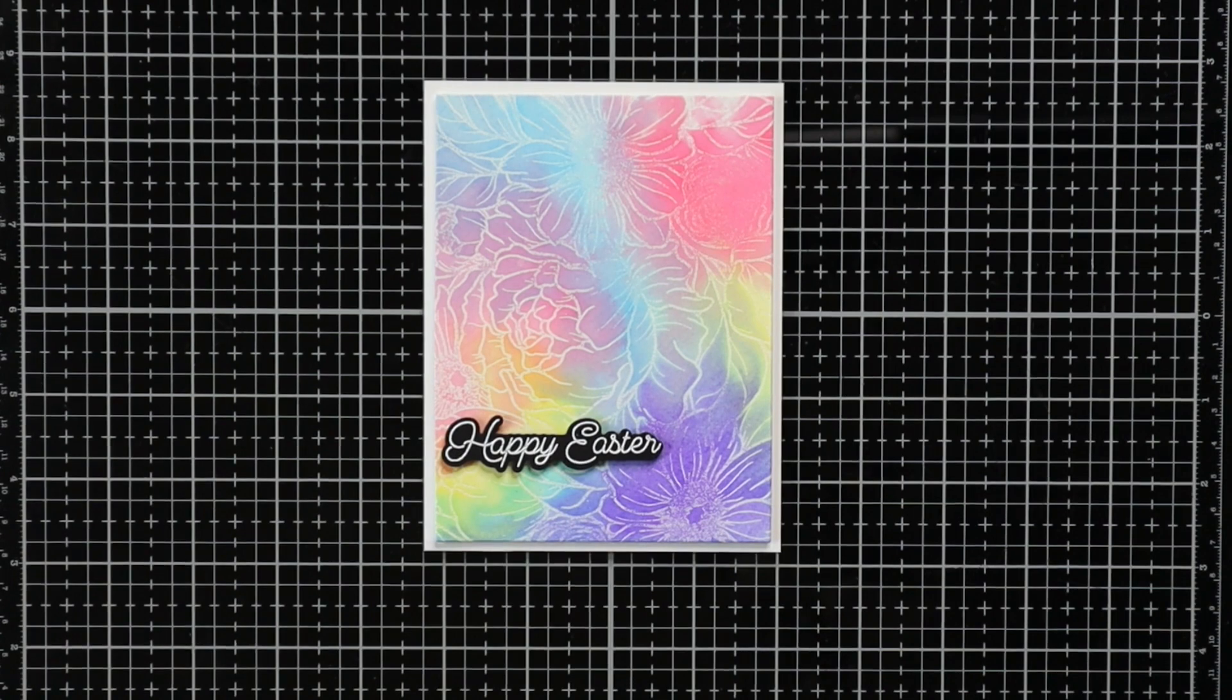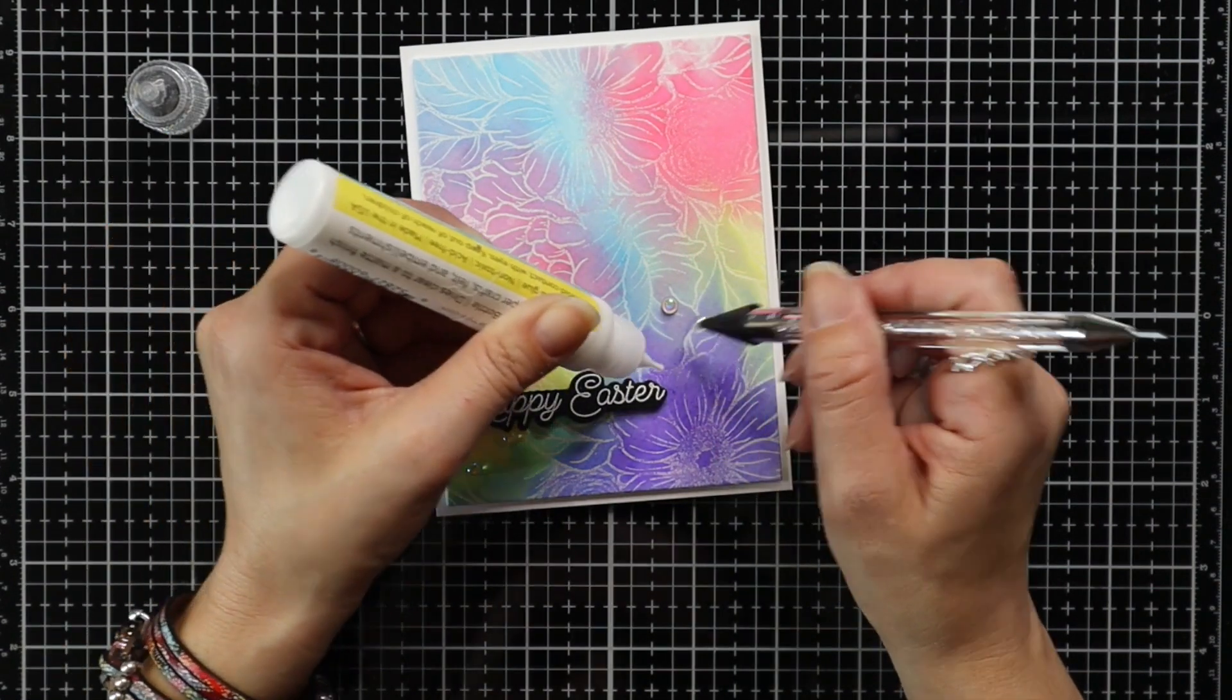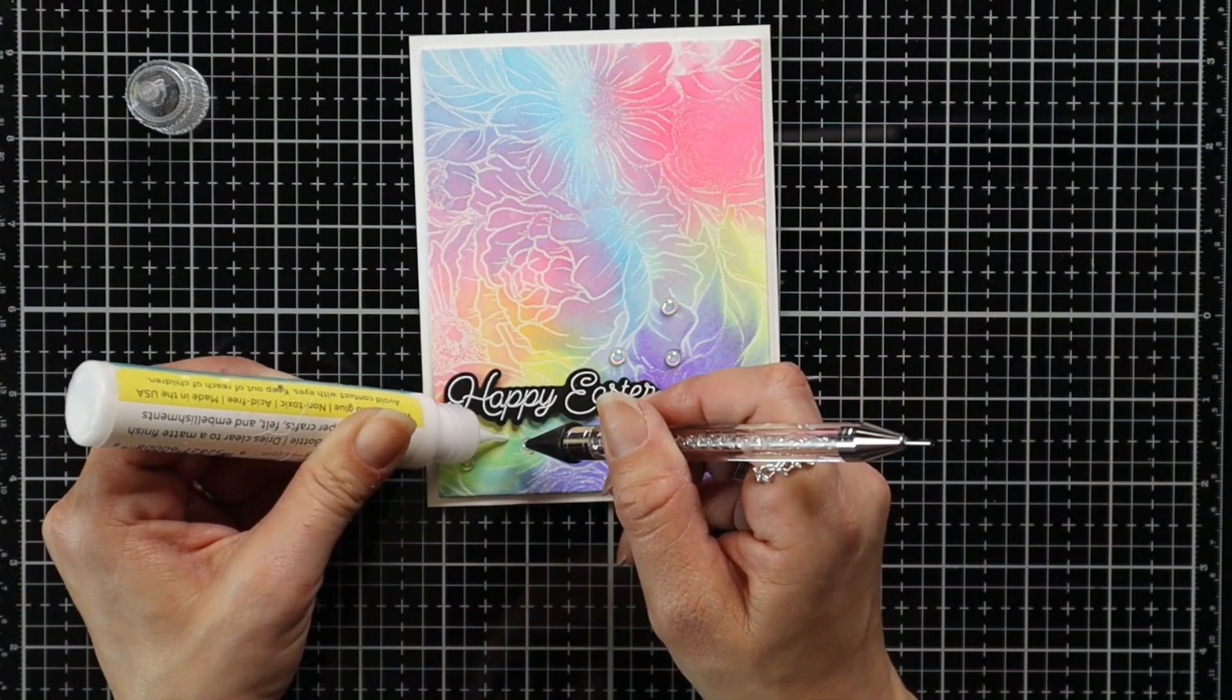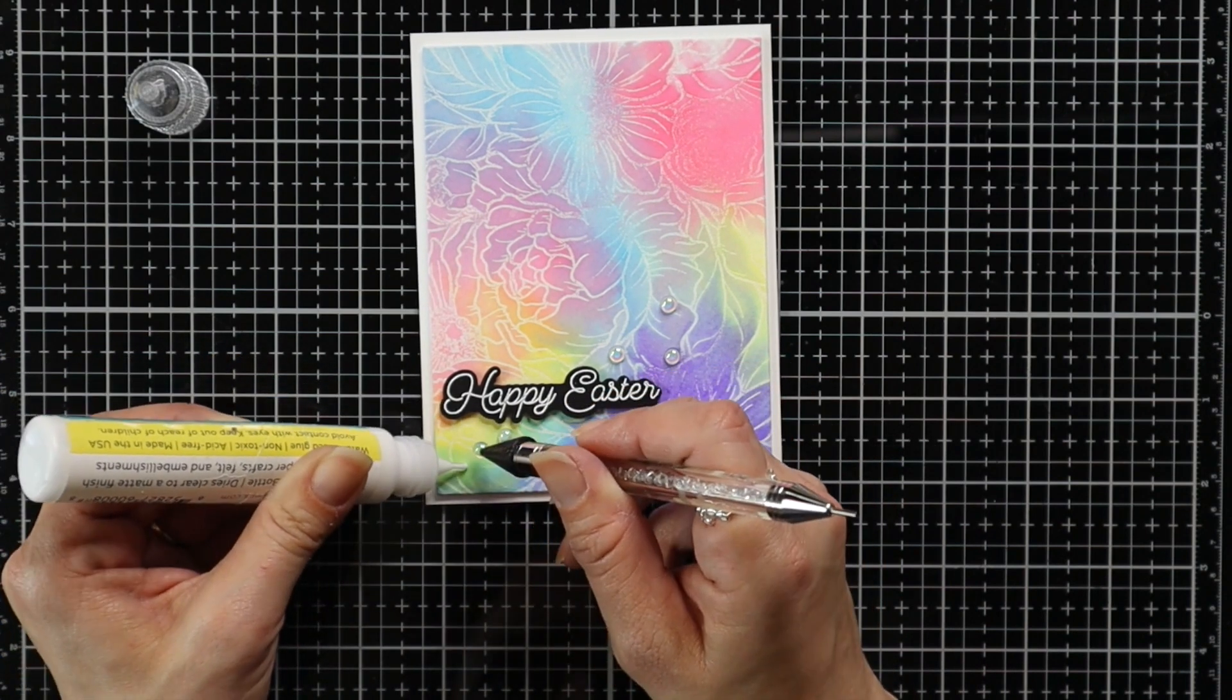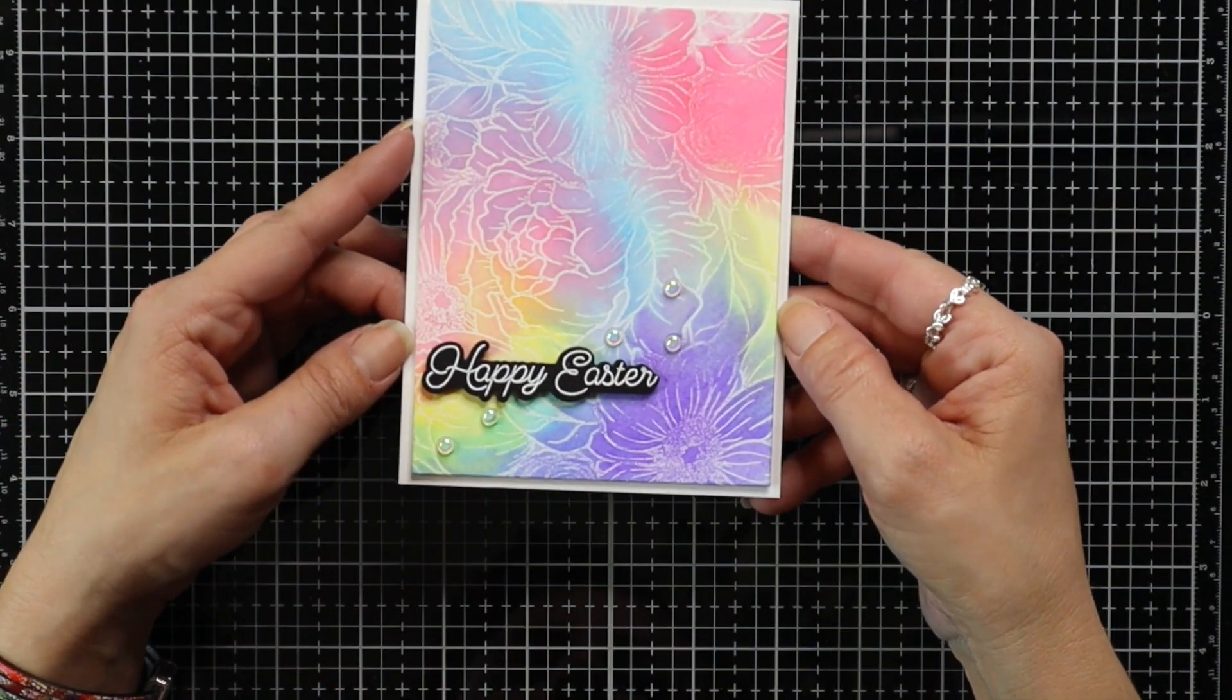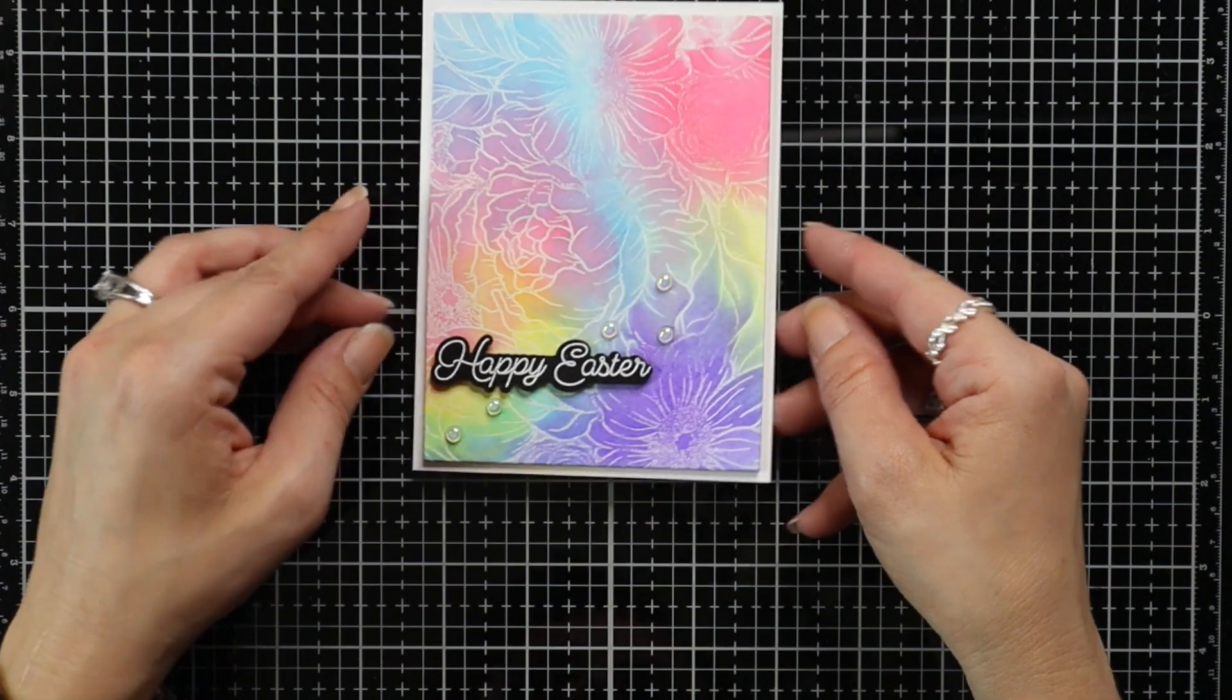To finish off the card I'm going to add just a few embellishments using my embellishment wand and the Honey Bee Stamps liquid glue. I'm not actually sure what embellishments these are so I will link something similar down below. And that's going to finish off my card for today.